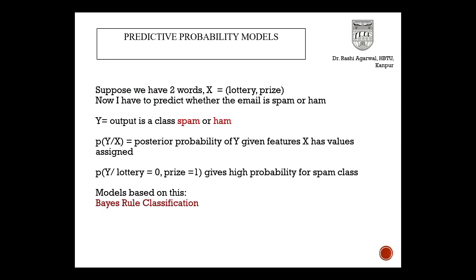Suppose I come to a problem where I am trying to classify an email as spam or ham. My Y is the output class — spam or ham — and my X is basically the presence of certain words, like 'lottery' or 'prize'. If either one is present, it is a spam; if neither is present, it is a ham. Here, we are trying to assess the probability of getting a spam or ham depending on the X output. Suppose my X has assigned values: lottery is absent, prize is present. What is the probability that Y is actually ham or spam? It may give a high probability of spam because prize is present. This is the basic predictive probability model. When we come specifically to the lecture on Naive Bayes, I will explain it much better mathematically.